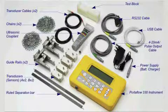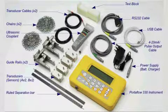Each Micronix portable flow meter has a dedicated case that contains the following: the flow meter, either one or two sets of sensors depending on the model, a set of guide rails, grease, cables, and chains.